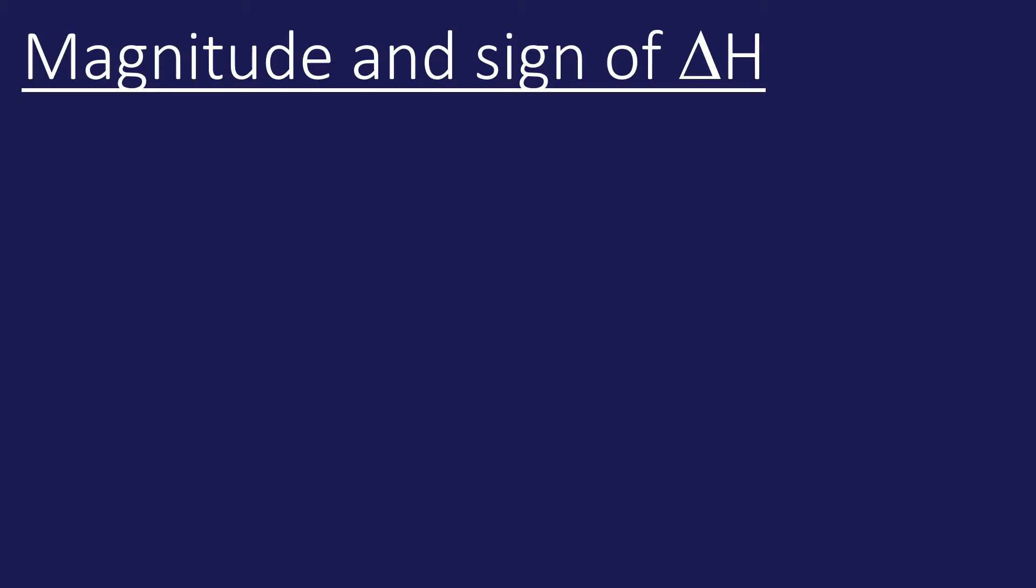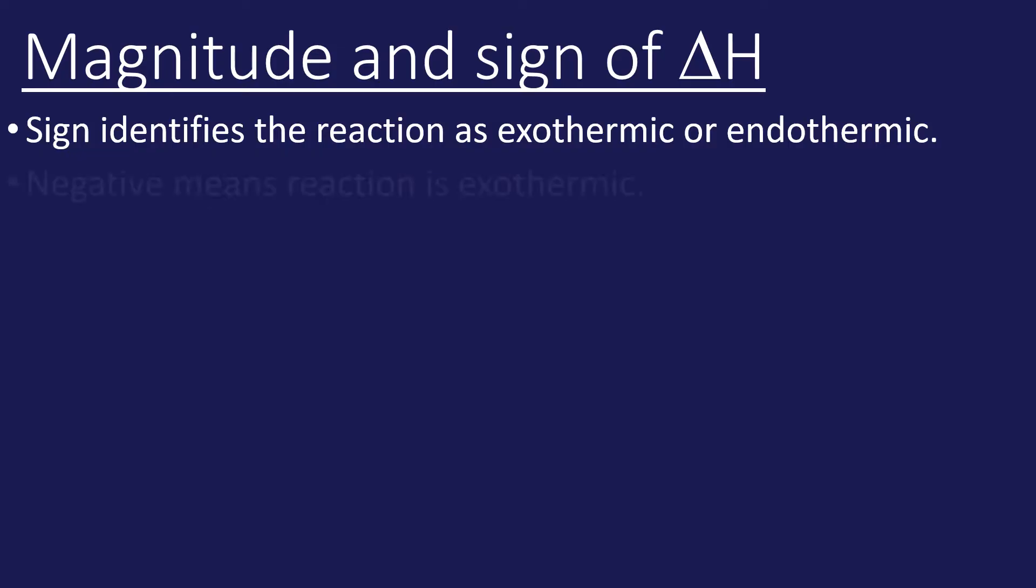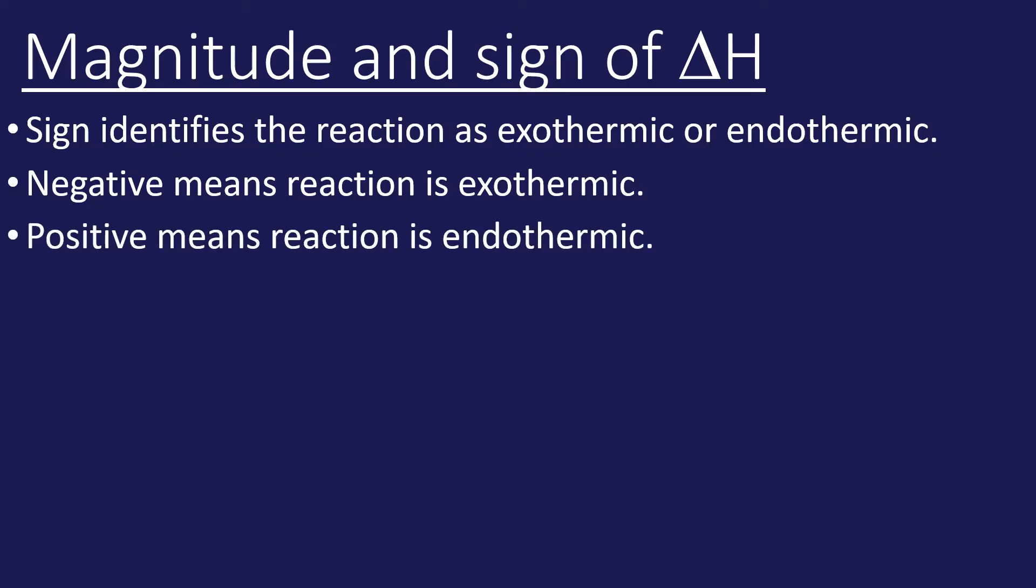The sign identifies the reaction as exothermic or endothermic. If delta H is negative, that means the reaction is exothermic because the chemical energy has decreased and that's been released to the surroundings, so it's usually accompanied with a temperature increase. The opposite is true for endothermic: the enthalpy has increased and the surrounding temperature will have decreased because energy will have gone from the surroundings to the chemical system.